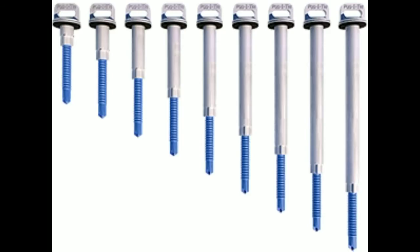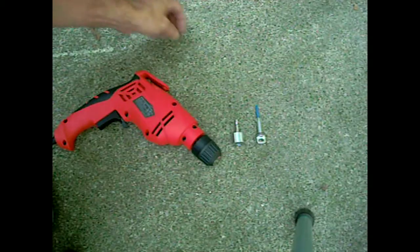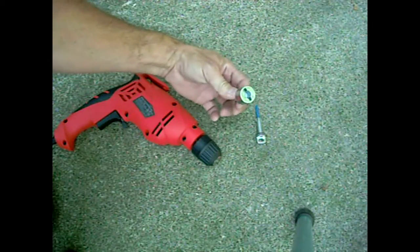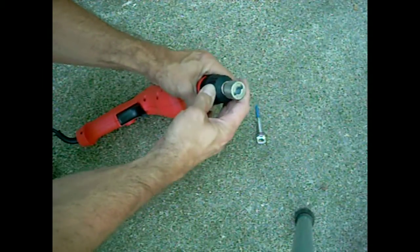There are several different barrel lengths to accommodate sheathing thicknesses up to four and one half inches. The barrel screw is installed using a standard power drill and a Positai chuck adapter.